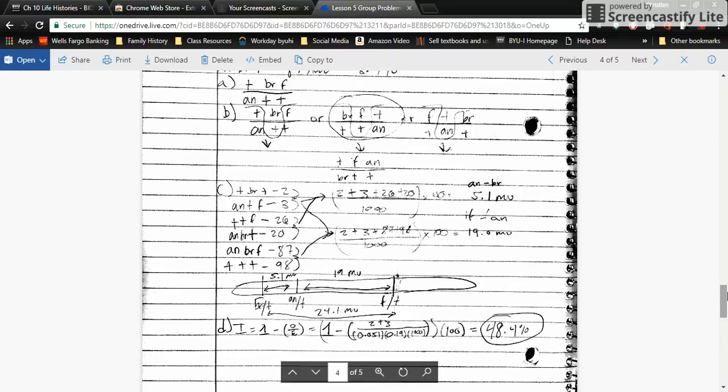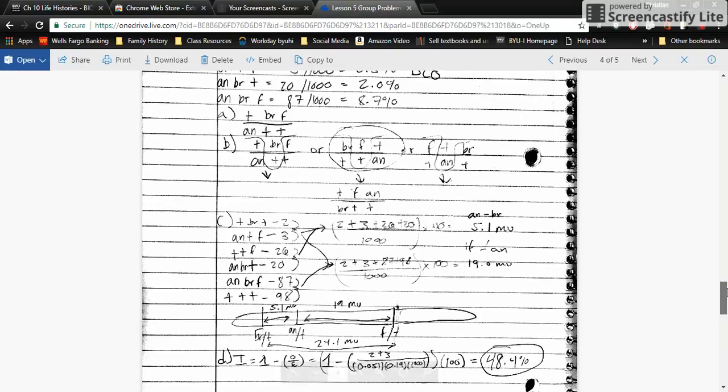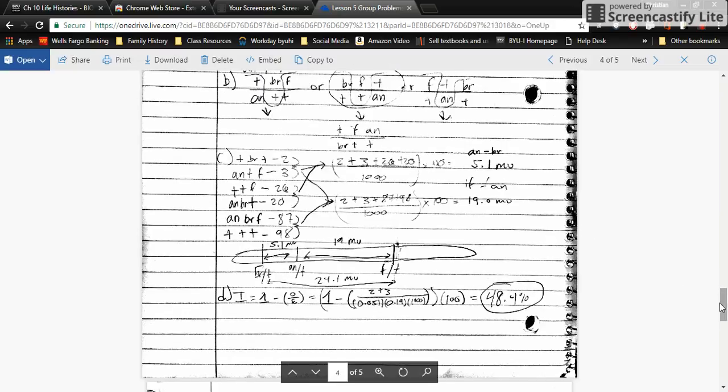For part C, we're going to add up the numbers of individuals to find the map units, the distance on the chromosome. We add up the least numerous, which is 2 and 3 for these genotypes, and then the next least numerous, these two right here. We add it all together, divide by 1,000, and multiply by 100 to get a percentage or map unit. We get 5.1, and I'm saying it's between AN and BR because right here AN and BR are sticking together. That's how you figure out the map unit distance between AN and BR.